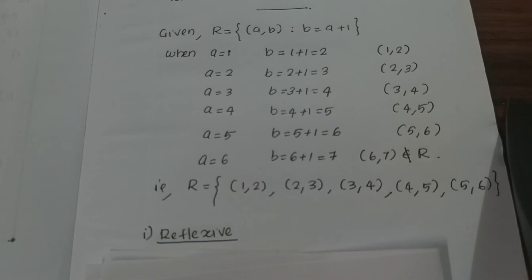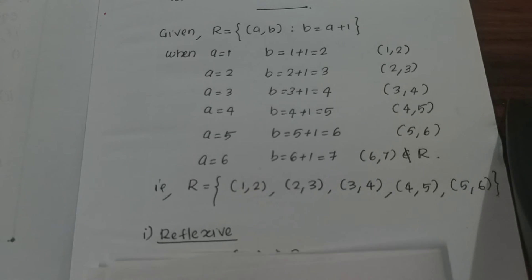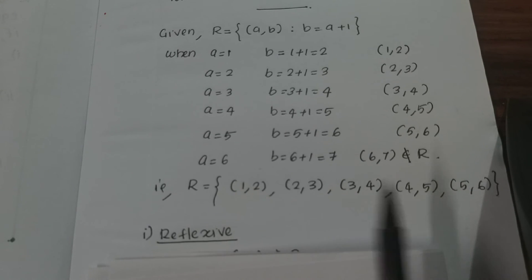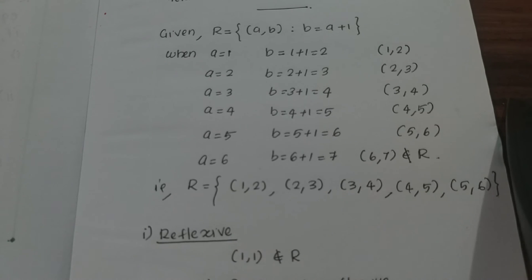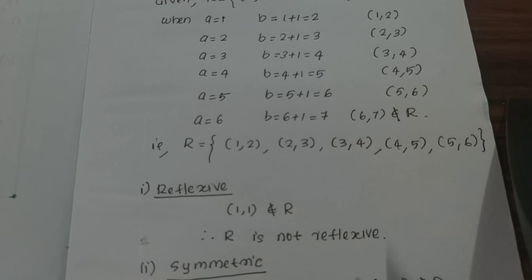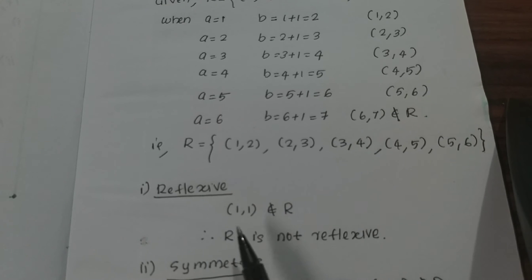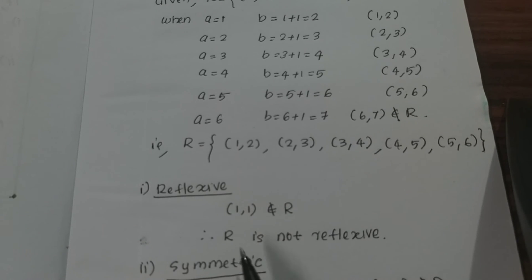First, check reflexive. For reflexivity, we need (a, a) in R for all a. But the pair (1,1) does not belong to R, therefore R is not reflexive.